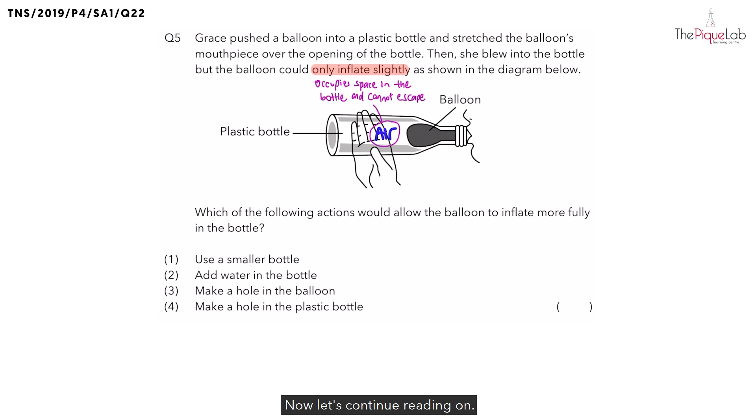Now let's continue reading on. Which of the following actions would allow the balloon to inflate more fully in the bottle? So think about it. If you want the balloon to inflate more fully, that means inside the bottle, must there be more space or less space? There must be more space available. So let's write this down. We want to have more space in the plastic bottle. Because in that way, then the balloon is able to inflate more fully.